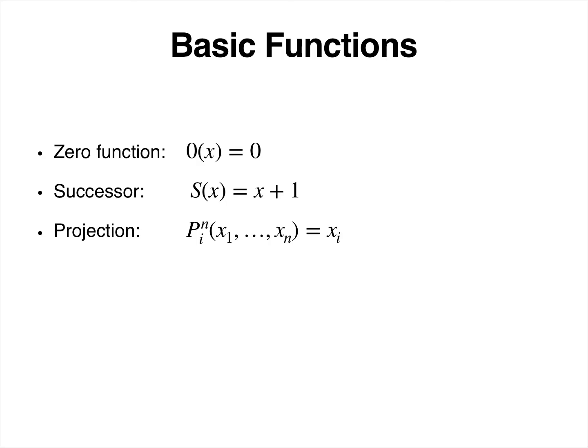The general idea is that you start with a very small set of basic functions which you consider computable or effective, and then generate new functions from these using two basic operations. The basic functions are the zero function, the successor function, and the projection functions — for every n and every i, this projection function is considered basic. These functions are clearly computable by a Turing machine.